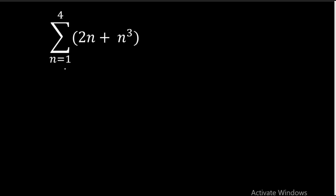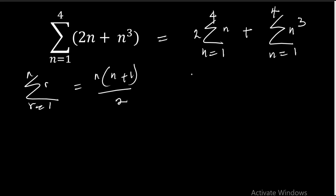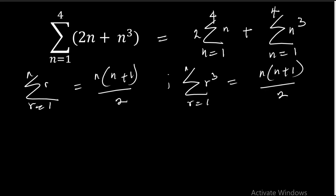Now let's take an example. The example asks us to find the summation of an expression. The first thing is to break the expression into its terms: n raised to power 3 and n. This is the same as the summation of 2n from n equals 1 to 4, plus the summation of n cubed from n equals 1 to 4. The summation of r equals n into n plus 1 over 2, and the summation of r cubed equals n into n plus 1 over 2, all squared.